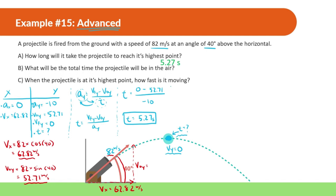Part B asks how long it will take to reach all the way to the ground. We know that when the projectile is launched from the ground and goes to the highest point, it takes double the amount of time to reach the ground again. Everything is parallel, so I'll just do 5.27 times 2, which gives us 10.54 seconds.